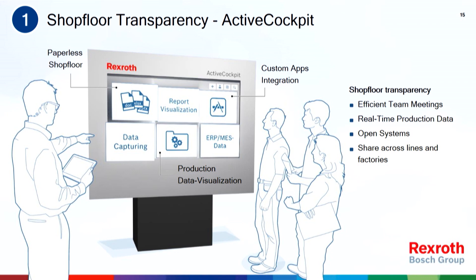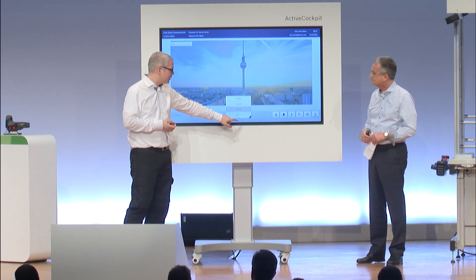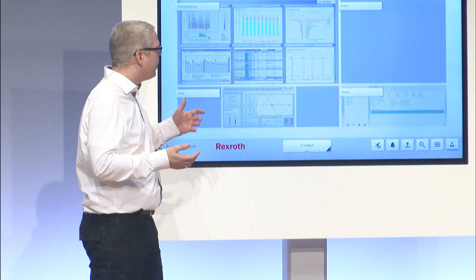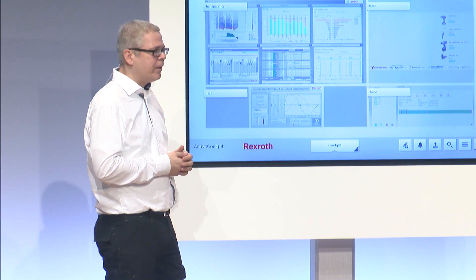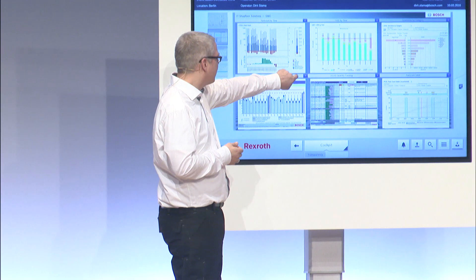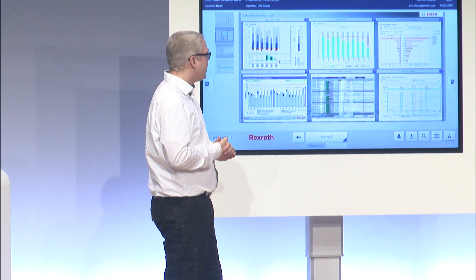Active Cockpit is basically designed to help us bring information from the cloud, from the other systems, down to the shop floor and support the people on the ground. It basically allows us in real time, for example, to open cockpits that are very easy to create, drill in, and then get information at your fingertips.